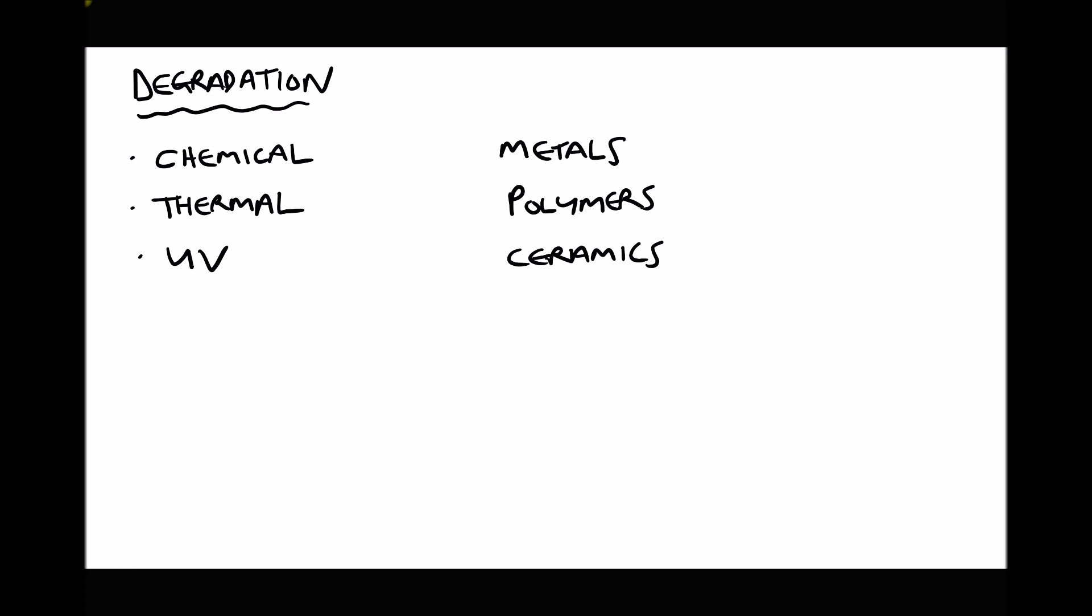So in this video we've looked at the degradation of metals, polymers, and ceramics. For metals we've looked at chemical degradation or corrosion. For polymers we've looked at thermal and UV degradation. And finally, for ceramics we've looked at thermal degradation.